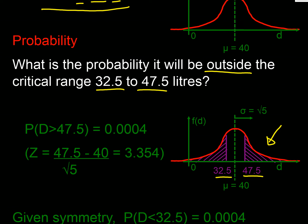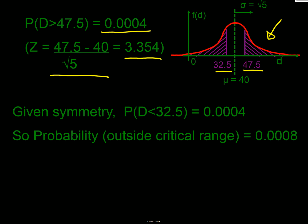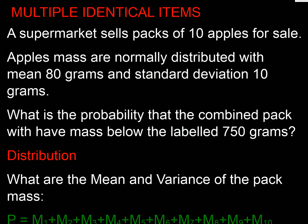We need P(difference > 47.5) + P(difference < 32.5). These bounds are symmetric around 40, so we can calculate one tail and double it. The z-value for the upper bound is (47.5 − 40) / √5 = 3.354 standard deviations. The probability for that tail is 0.0004. By symmetry, the total probability outside the critical region is 0.0008 — about 0.1%, so very unlikely.